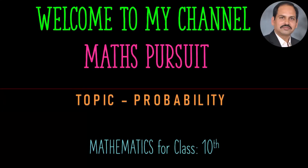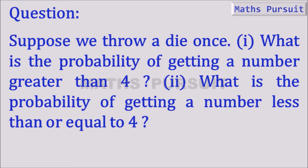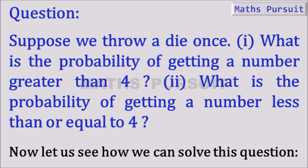Welcome to my channel Maths Pursuit. Today under the topic probability, let us see what exactly we have in the question. It is given that suppose we throw a die once — what is the probability of getting a number greater than 4? What is the probability of getting a number less than or equal to 4? Now let us see how we can solve this question.